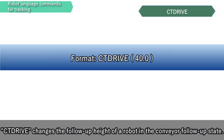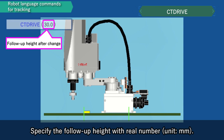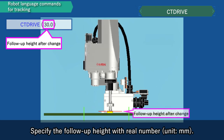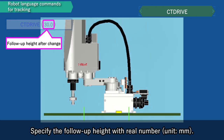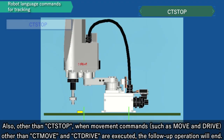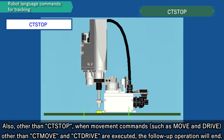CT-drive changes the follow-up height of a robot in the conveyor follow-up state. CT-stop ends the follow-up operation and stops the robot in the conveyor follow-up state. Also, other than CT-stop, when movement commands other than CT-move and CT-drive are executed, the follow-up operation will end.